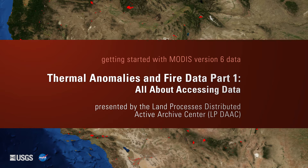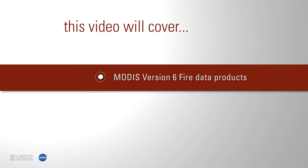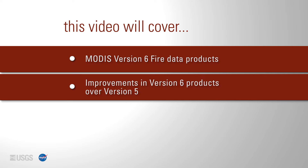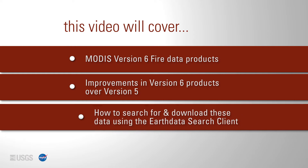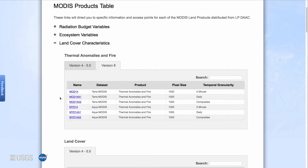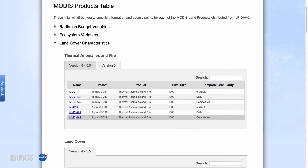This video is Part 1 of the Getting Started with MODIS Version 6 Thermal Anomalies and Fire Data video series. This video will cover the MODIS Version 6 fire products, improvements in Version 6 products over Version 5 products, and how to search for and download these data using the Earth Data Search Client data access tool.